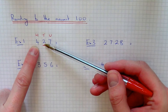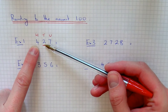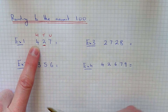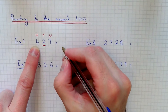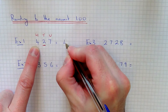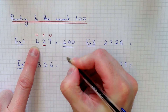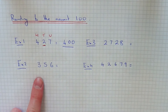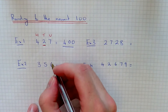If this number was 5 or above, then we'd round it up to 500. So since it's a 2, we're going to round it down to 400. So let's move on to example 2. This time we've got 356.